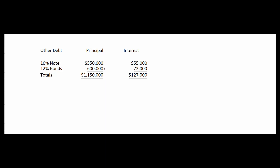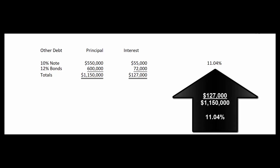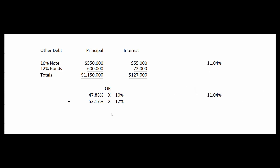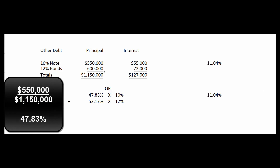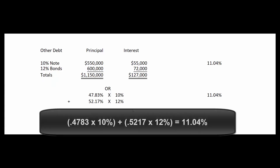There are two ways to calculate the weighted average rate on the other debt. Method 1: A $550,000 note at 10% generates $55,000 of interest; a $600,000 note at 12% generates $72,000. Total principal = $1,150,000; total interest = $127,000; rate = $127,000 ÷ $1,150,000 = 11.04%. Method 2: 47.83% of debt is at 10% and 52.17% is at 12%. Weighted together, these also yield 11.04%.